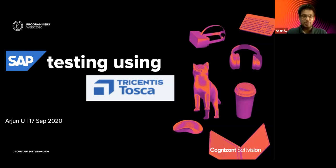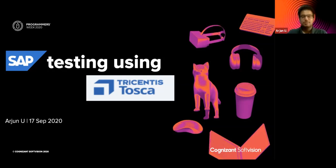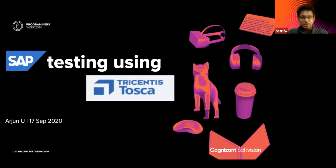In the next 45 minutes, we are going to discuss SAP testing using Tricentis Tosca. Both are currently big names in the industry — SAP as well as Tricentis. We'll discuss a few aspects of those particular topics. Before we get started, let me introduce myself. I'm Arujan, a QA professional with six years of IT experience in an agile testing environment.